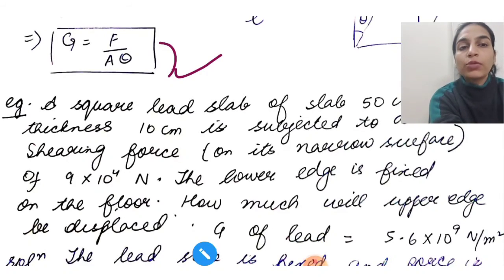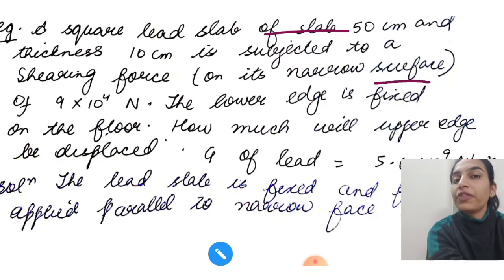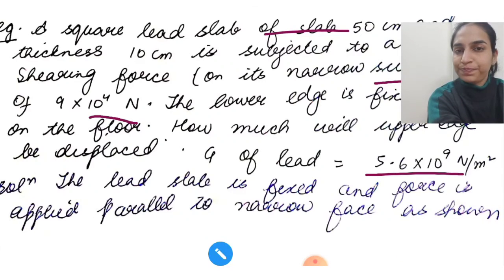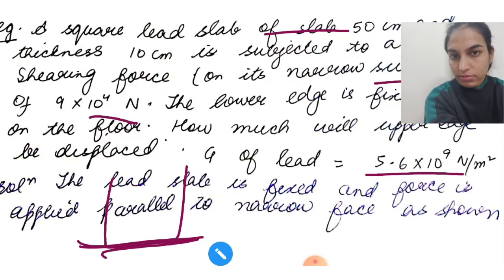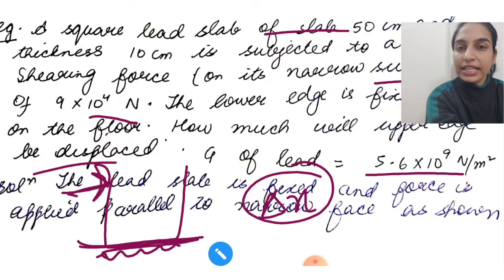Let's do a numerical on this one. A square lead slab of side 50 cm and thickness 10 cm is subjected to a shearing force on its narrow surface of 9.4 into 10 to the power 4 newton. The lower edge is fixed on the floor. How much will the upper edge be displaced if G of lead is given? This is a slab where the bottom surface is fixed and there's a tangential force on top. What do you need to calculate? You need to calculate the displacement, which is delta X.